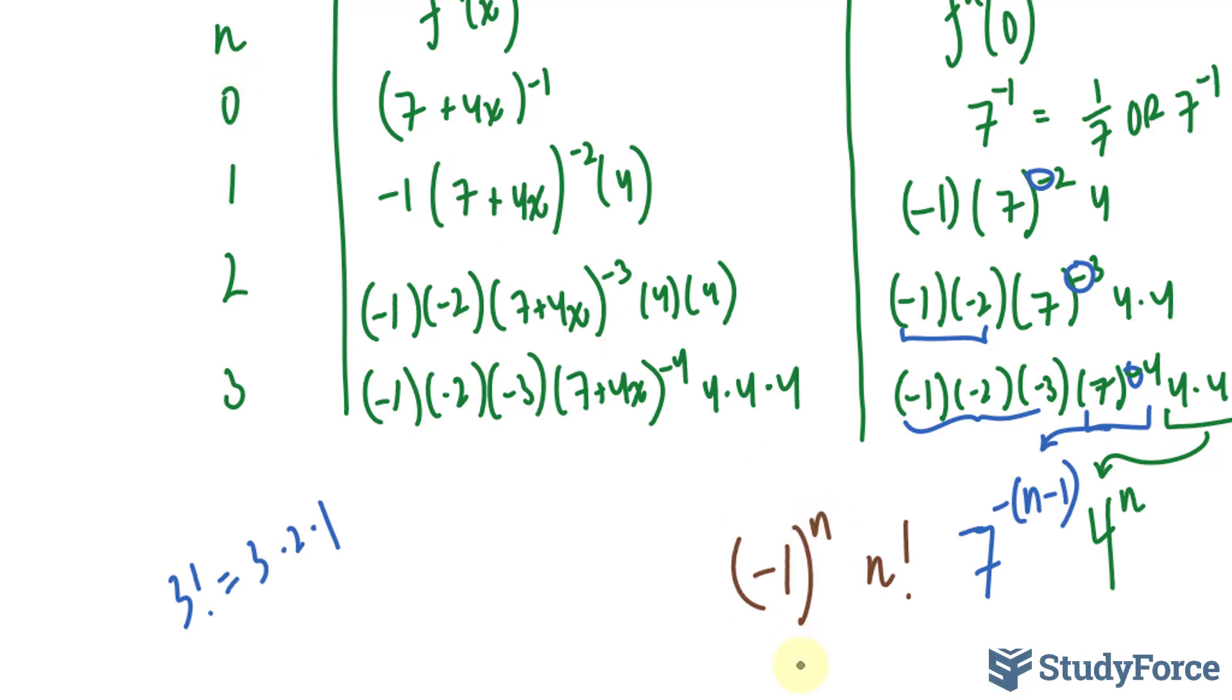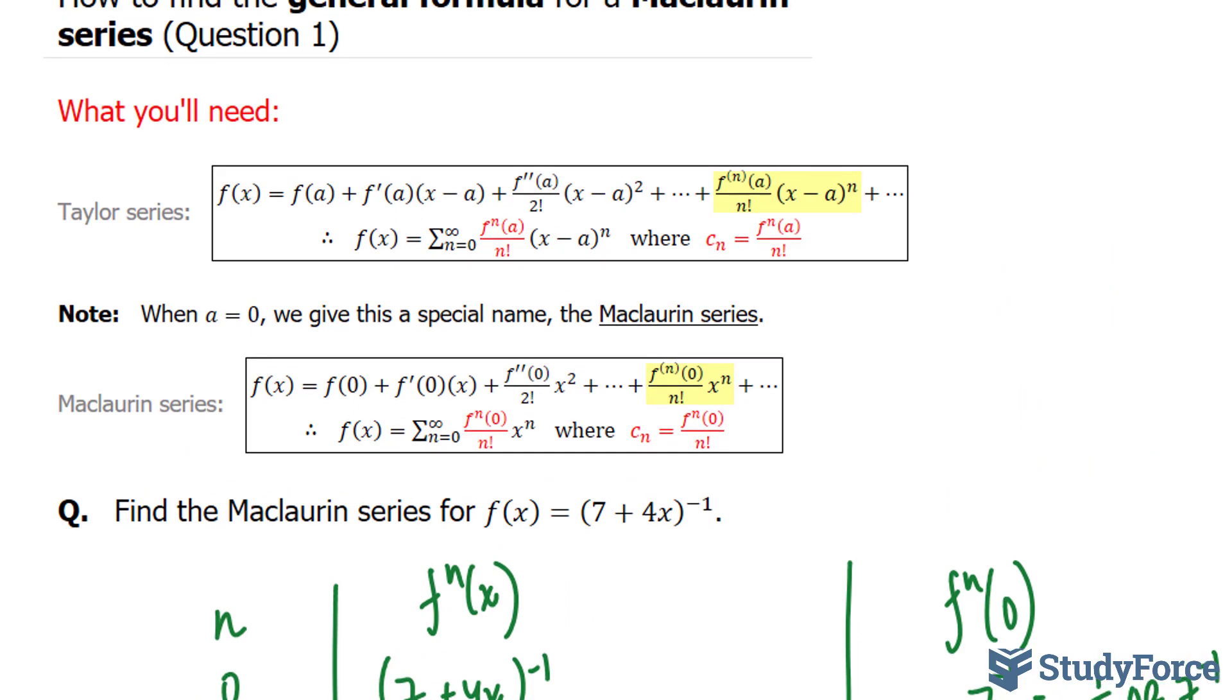If I substitute 0 into here, I get negative 1 to the power of 0 is 1. That's neutral. If I substitute 1 into here, I get negative 1 to the power of 1, which is negative, and then positive, and then negative. This represents f^(n) at 0 of the general formula for the Maclaurin series.